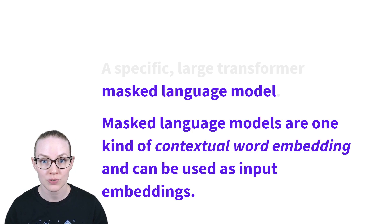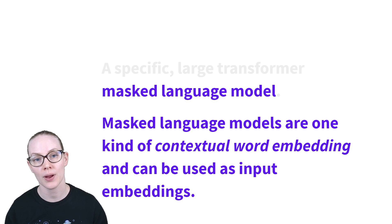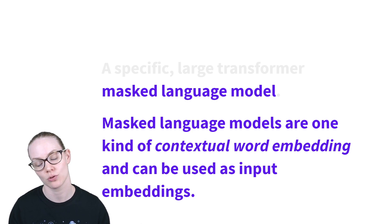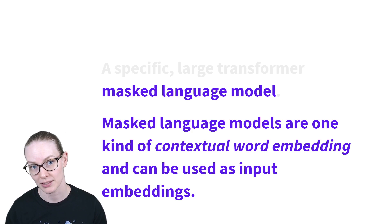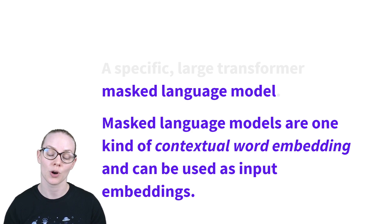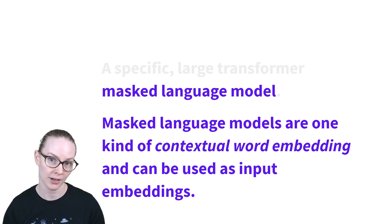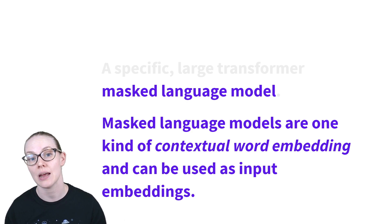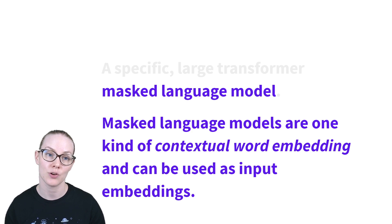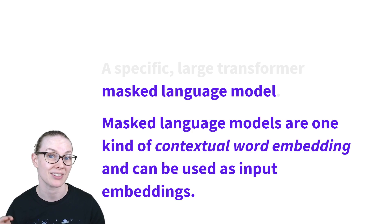Masked language models are useful because they're one way of doing contextual word embeddings. If you watched the word embedding video, you know that one of the drawbacks of traditional word embeddings is that the word 'bark' in 'the dog's bark' and 'the tree's bark' would be given the same representation. Contextual word embeddings allow you to have different representations for different senses.